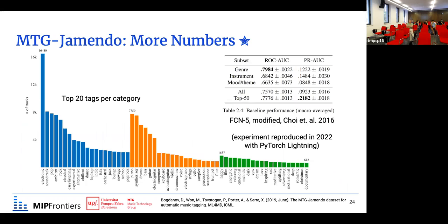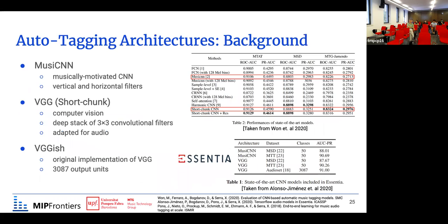The original paper was in 2019 but the same approach was re-implemented by me with modern Python and PyTorch Lightning. For the baseline we use the fully convolutional network from Choi et al. from 2016, slightly modified. You can see some performance numbers and a histogram of the top 20 tags per category — genre, instrument, and moods. The dataset is quite unbalanced: for example, the 'electronic' tag is way over-represented compared to the next ones like 'soundtrack' or 'pop'.